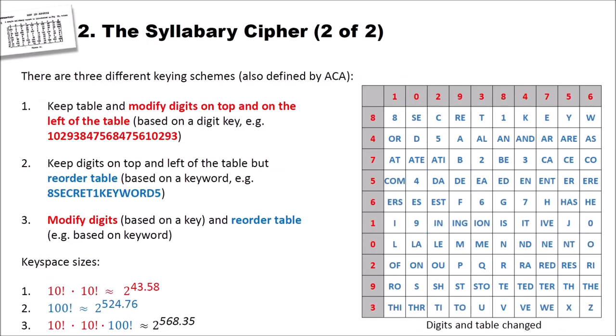Now let's have a look at keying schemes. There are three different keying schemes also defined by the American Cryptogram Association. The first keying scheme is to keep the table, so don't modify the content of the table, and modify digits on top and on the left of the table. This is based on a digit key, for instance 1, 0, and so on. How do you do that? You just take the first 10 digits and write these into this row here: 1, 0, 2, and so on. Keep in mind that you can only use a digit once. For instance, if you would use two times the 1, then 8 would be 81 and SE would be 81. So you have to use each digit only once. You do the same on the left side of the table with the 10 remaining digits. You just write them into the table from top to bottom. So you have permuted the digit key, and this also permutes the assignment from digits to the content of the table.